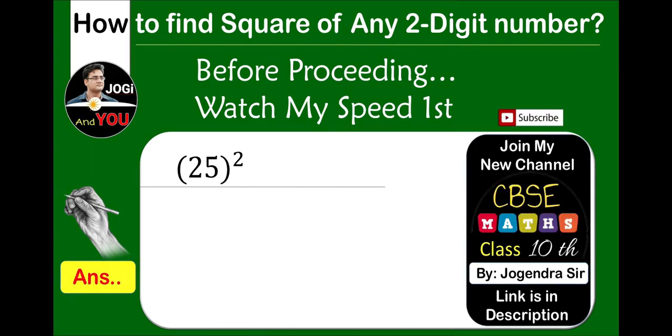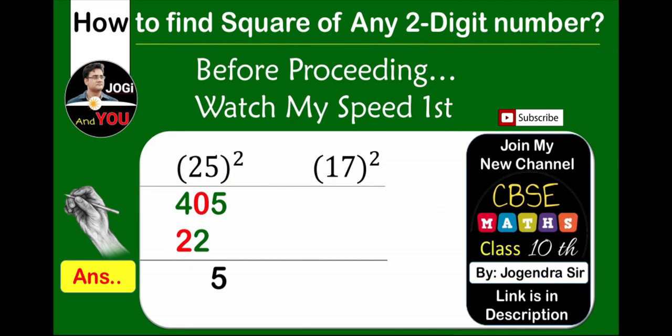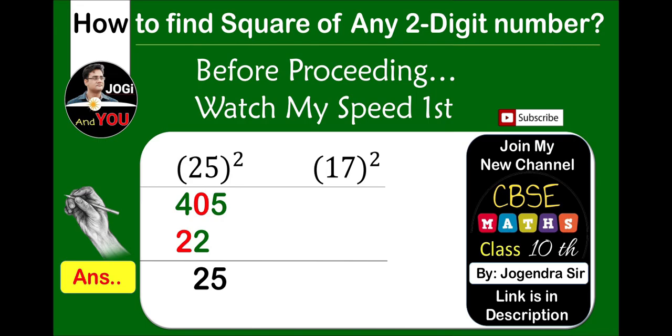Here is the first example, square of 25. Now start with 25, watch my speed, how fast I am doing it: 2 to 4, 10, 20 and 25, 5, 2 and 6.